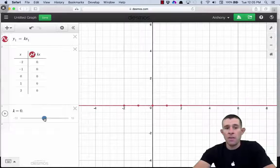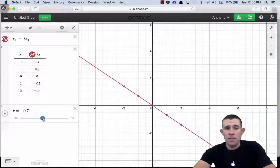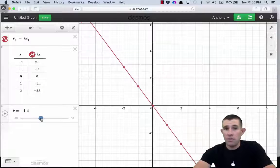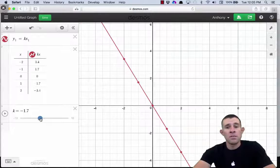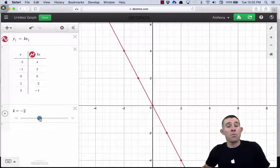Now as we go negative, that line is going to slope down and to the right, and as we increase that value of negative number, it should be more steep as that k value gets more and more negative.